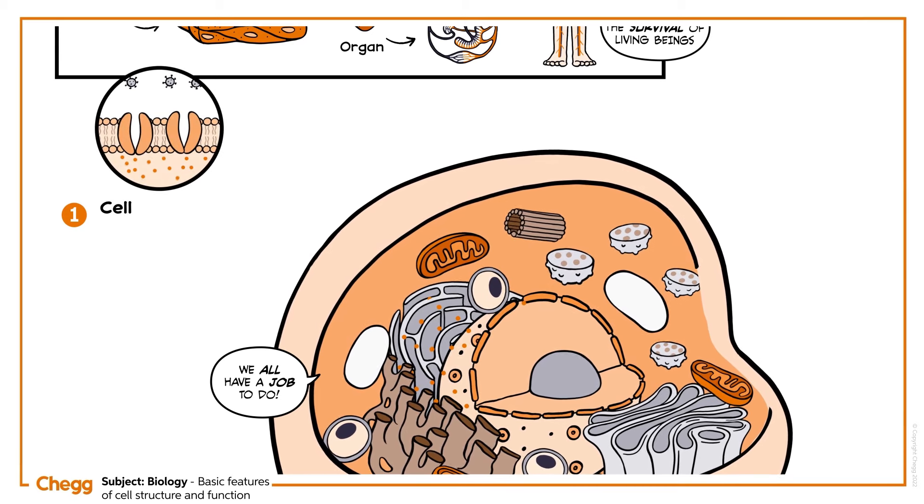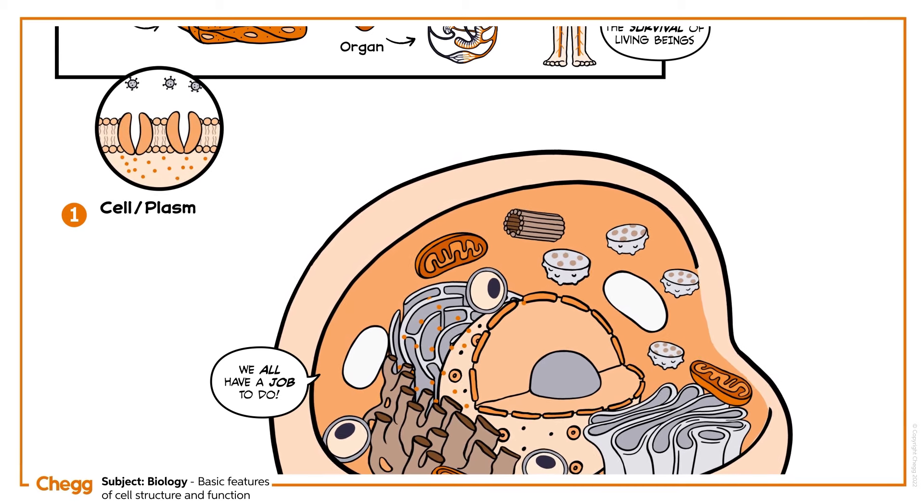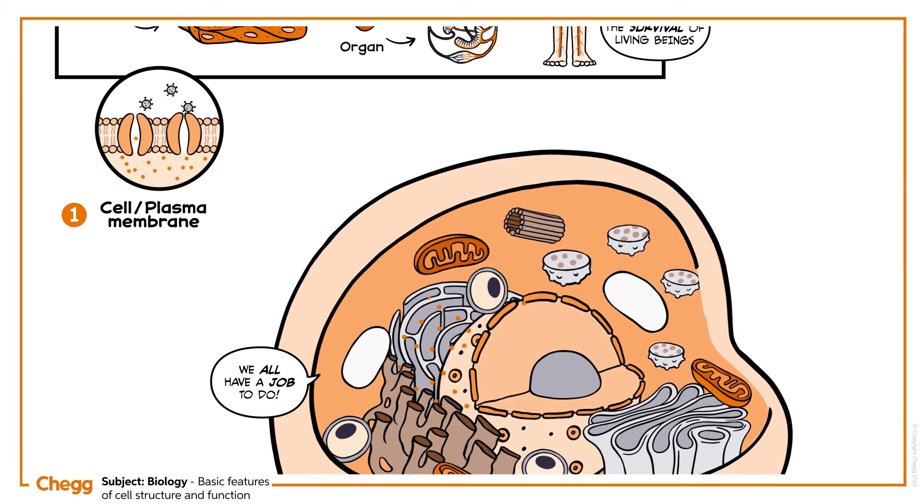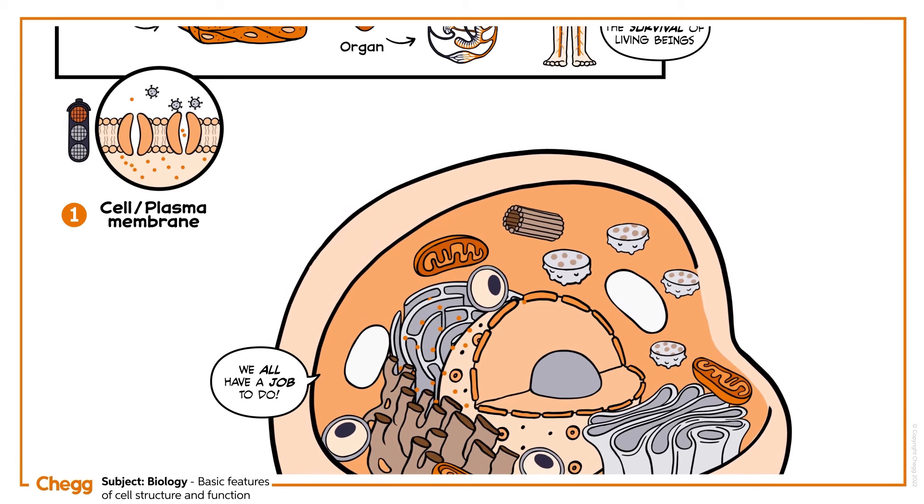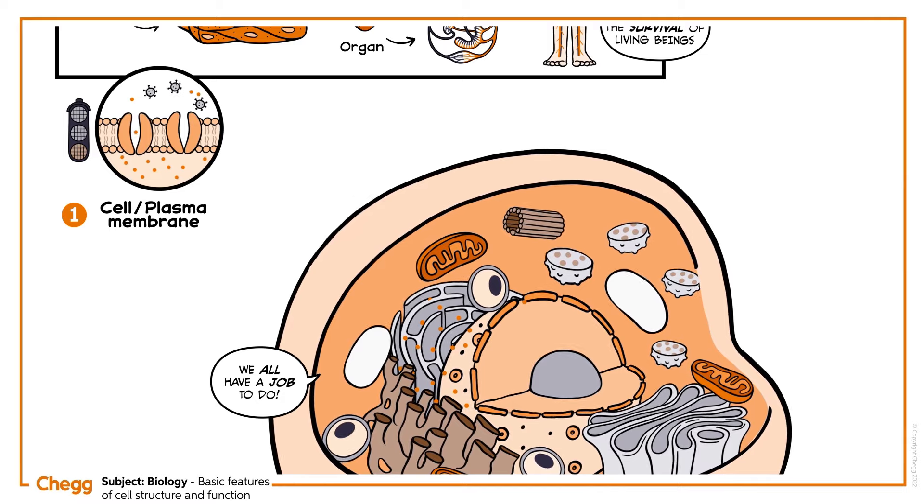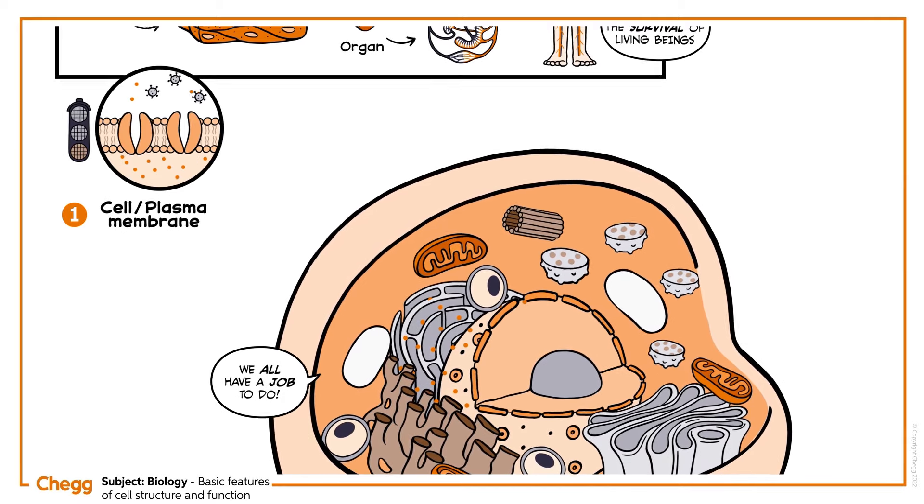Cell membrane: It is also known as plasma membrane, and it protects the cell from injury or pathogen invasion. It also helps regulate the movement of substances inside and out of the cell.